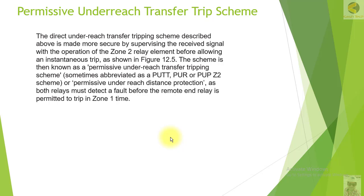Welcome. In this section we will learn about the Permissive Underreach Transfer Trip scheme. The direct underreach transfer trip scheme is made more secure by supervising the received signal with the operation of a Zone 2 element before allowing an instantaneous trip, as shown in figure 12.5. The scheme is then known as the Permissive Underreach Transfer Tripping scheme, sometimes abbreviated as PUTT.